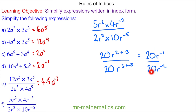We can simplify this fraction to make 1, and then we have r to the power of negative 1 take away negative 2 — these become an addition — so we have r to the power of 1, or simply r.